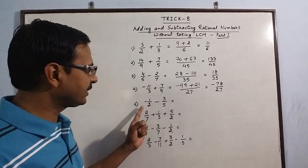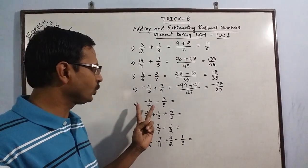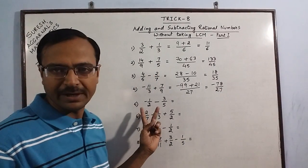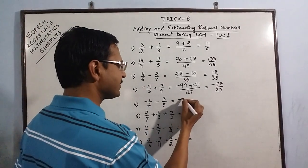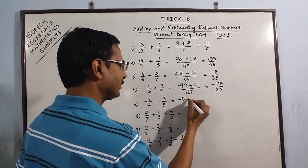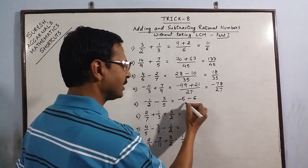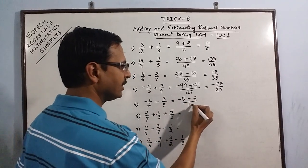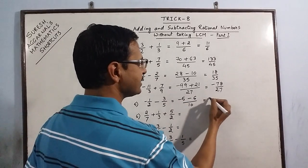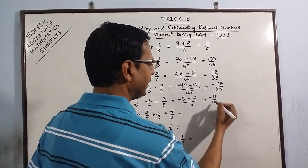Now I apply the same method to two rational numbers both having negative signs. Minus 5 times 2 is minus 10, minus 5 times 1 is minus 5; minus 5 minus 5 is minus 10 in the numerator, and 3 times 2 is 6 — wait, 3 times 2 is 6 in the denominator upon 5 times 2 is 10. The answer is minus 11/10.